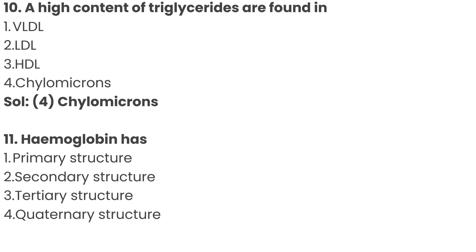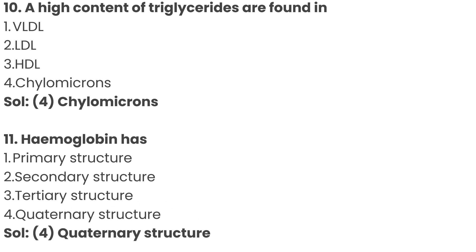Question number 11: Hemoglobin has? Option 1: primary structure, Option 2: secondary structure, Option 3: tertiary structure, Option 4: quaternary structure. The correct answer is Option 4: quaternary structure.